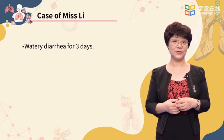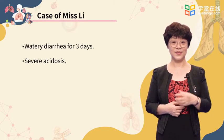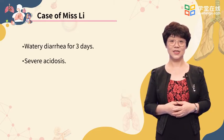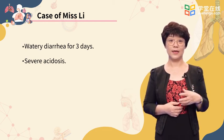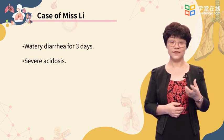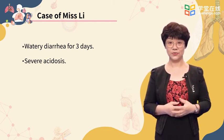Let's continue to study the case of Ms. Li. She has watery diarrhea for three days, and blood test shows severe acidosis. What kind of acidosis does she have, and why does diarrhea cause acidosis? I hope you can figure out the answer when we complete our discussion today.